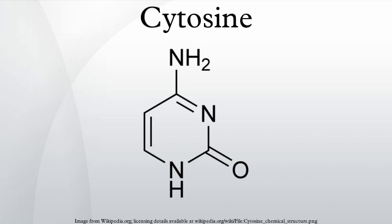Cytosine chemical reactions: Cytosine can be found as part of DNA, as part of RNA, or as part of a nucleotide — cytidine triphosphate. It can act as a cofactor to enzymes, and can transfer a phosphate to convert adenosine diphosphate to adenosine triphosphate.